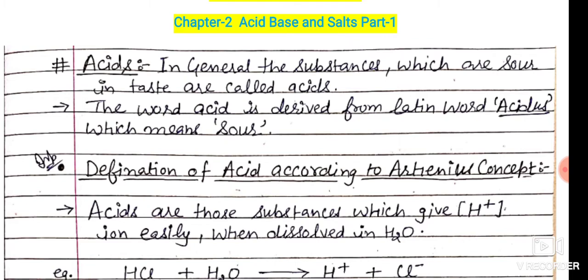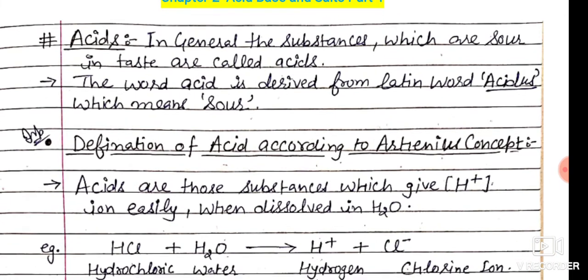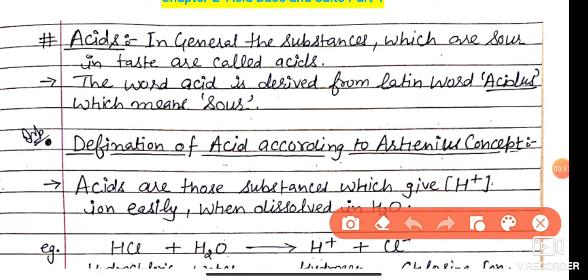Let's begin this part. First of all, what is the term Acid? In general, the substances which are sour in taste are called Acids. The word Acid is derived from the Latin word 'Acidous' which means Sour.